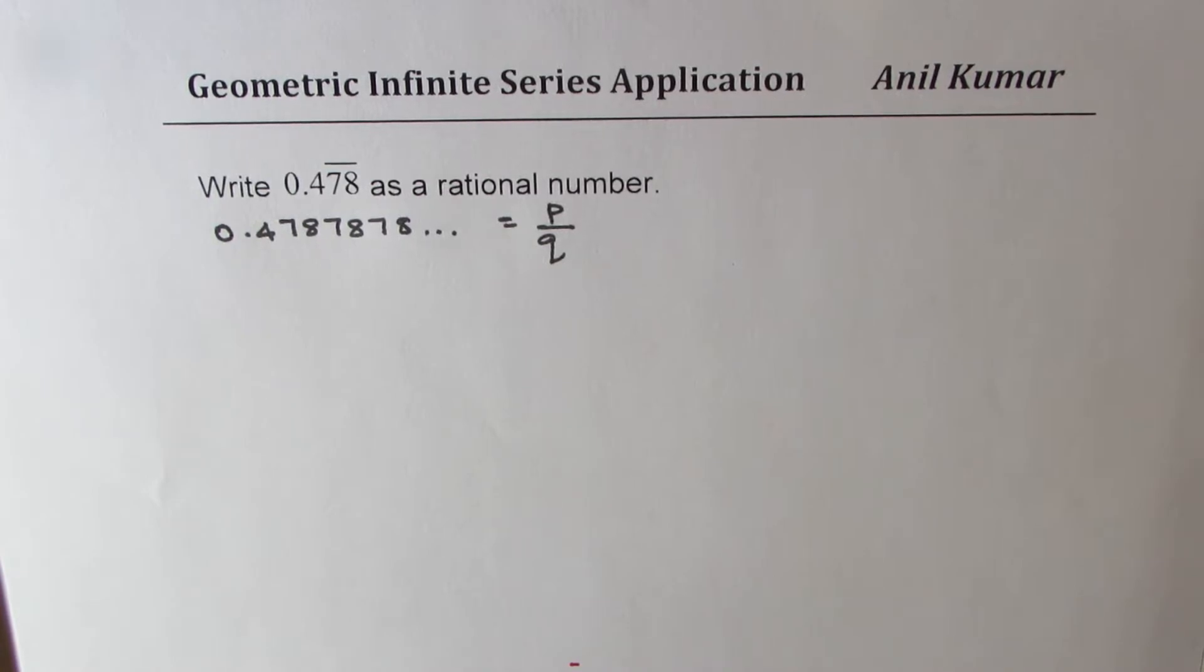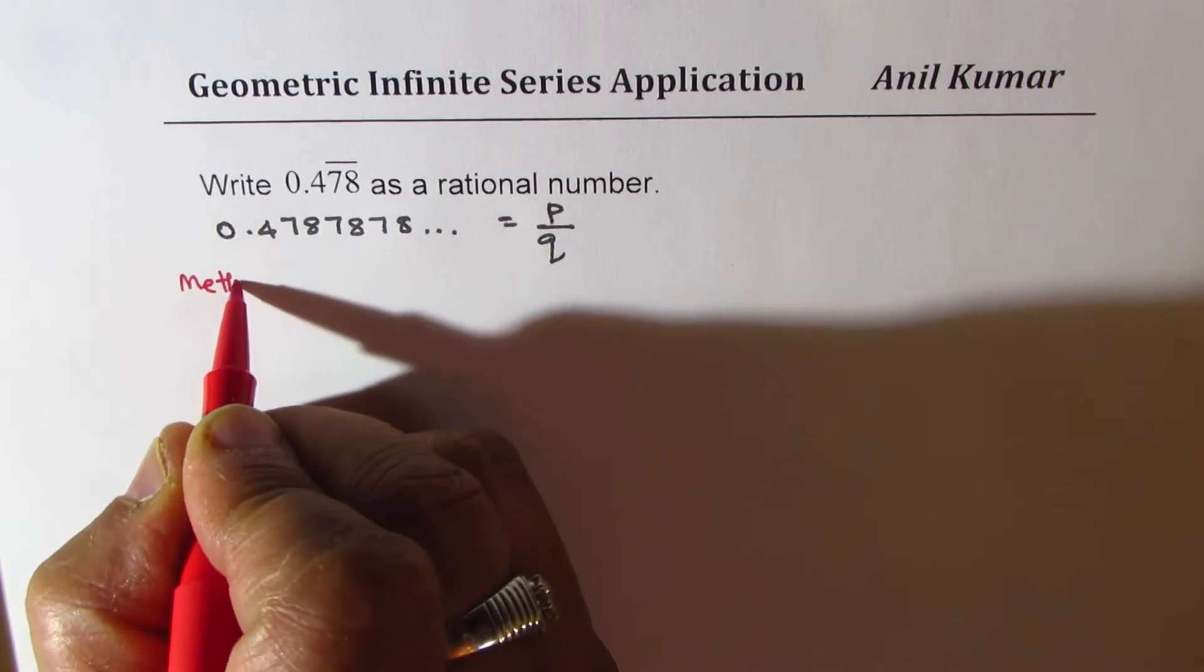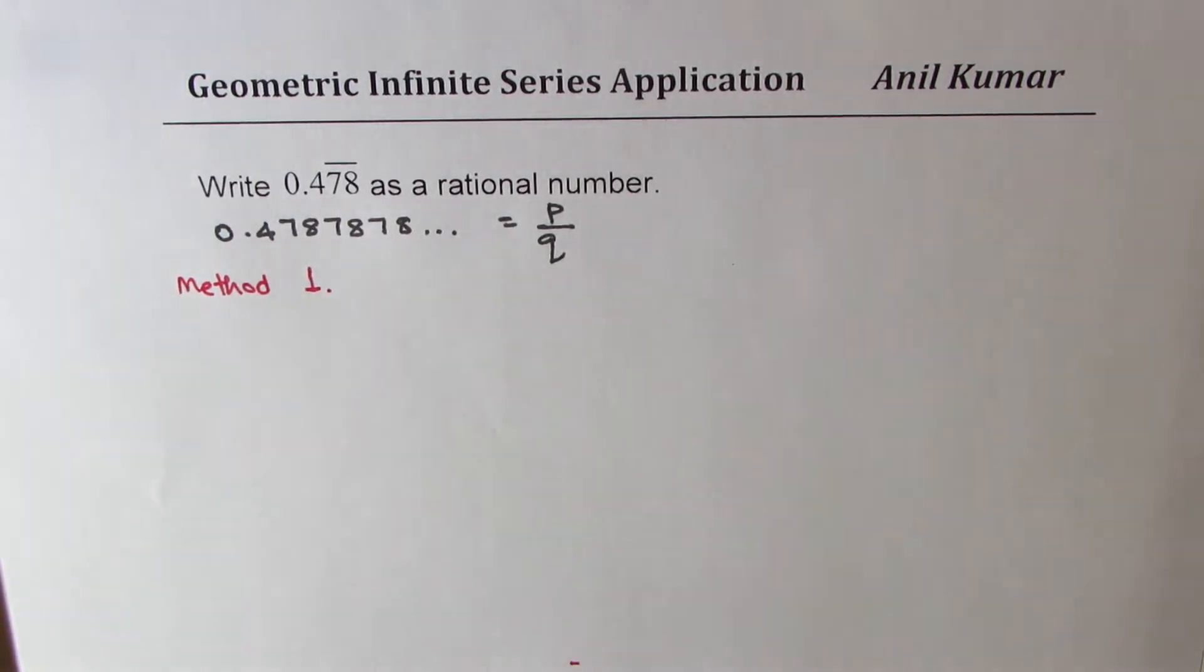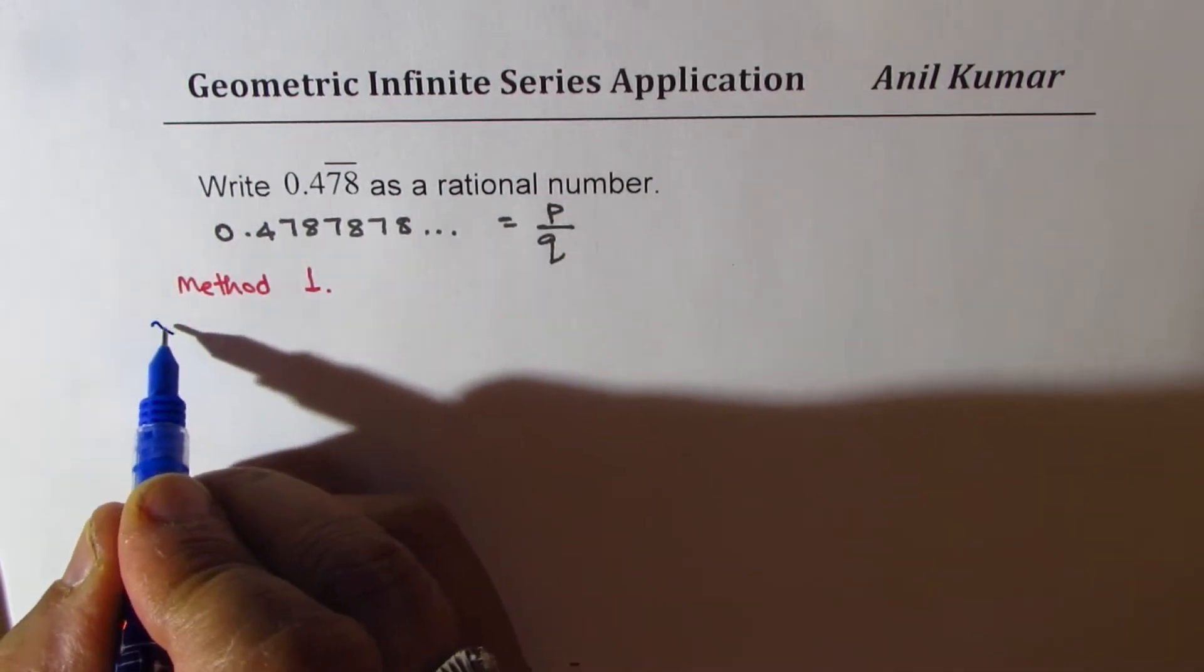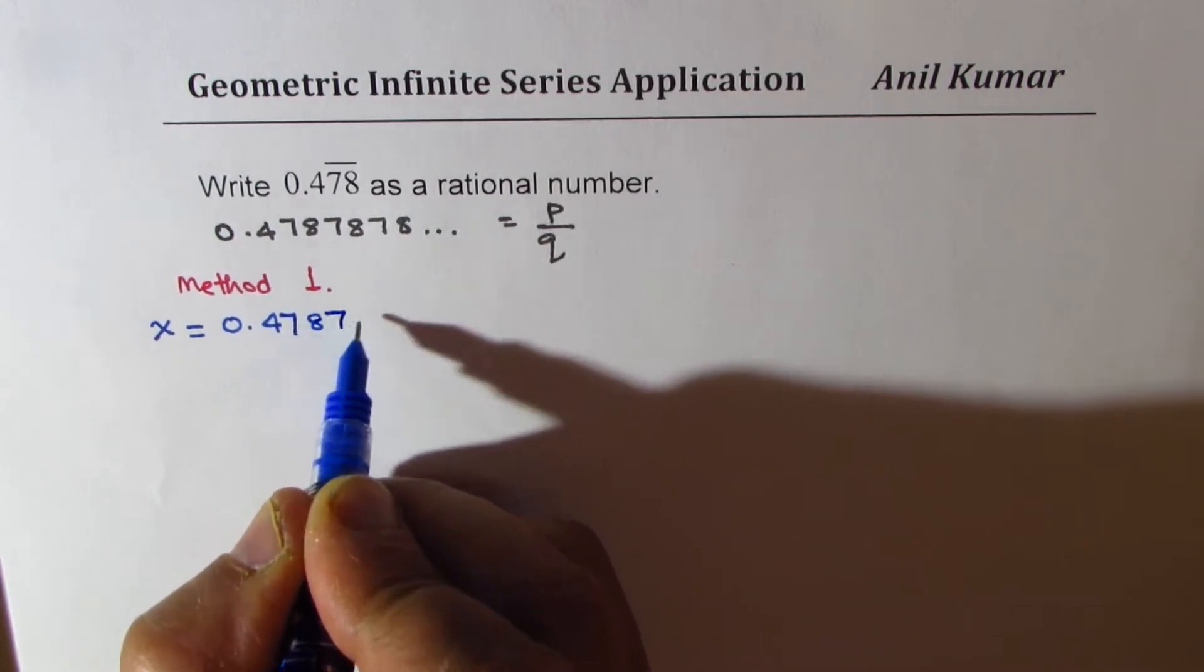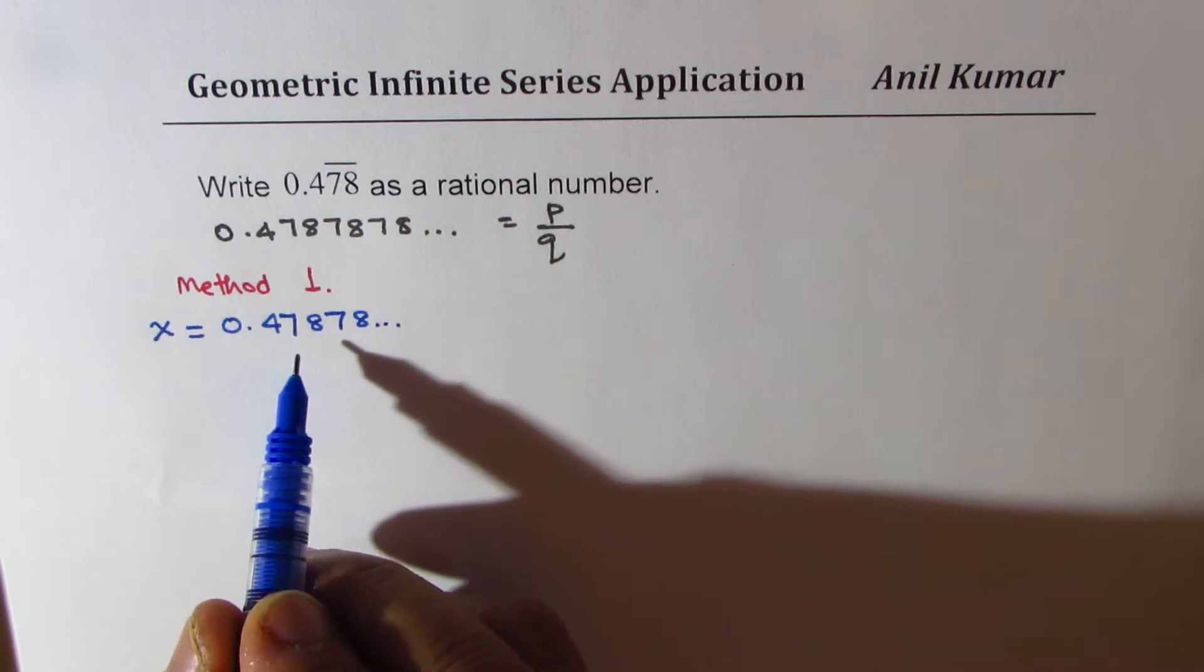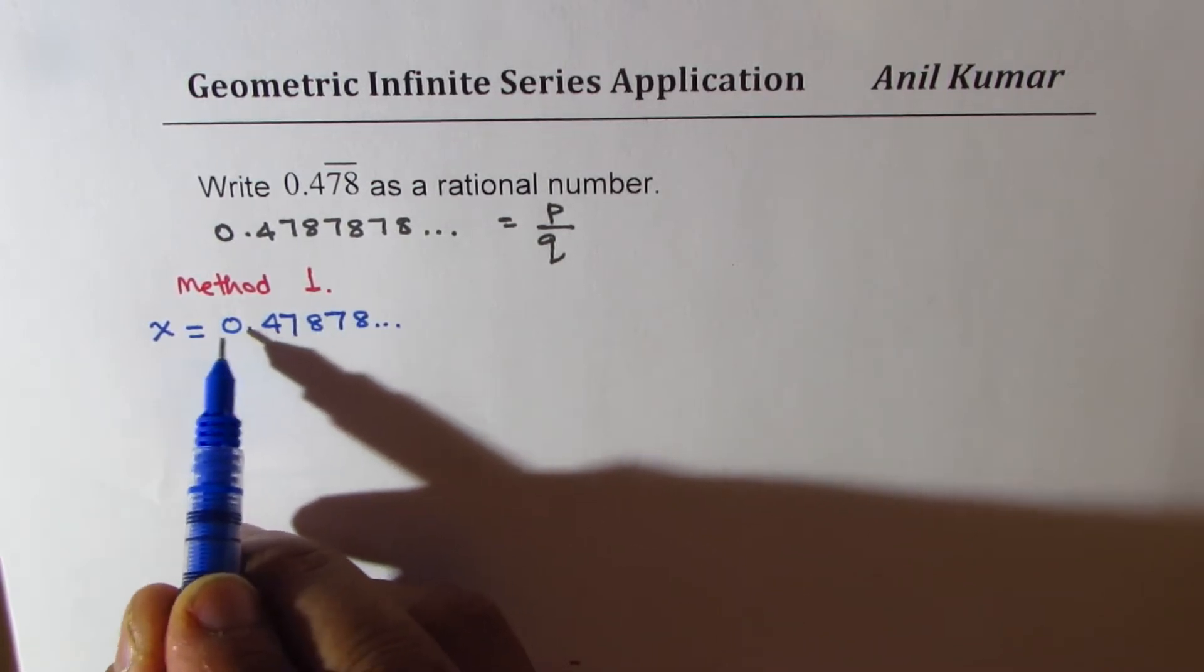Let me use method number one first, which is simple and straightforward and which we learned in junior classes. Let X be equal to 0.4 point 78 78 78 and so on.